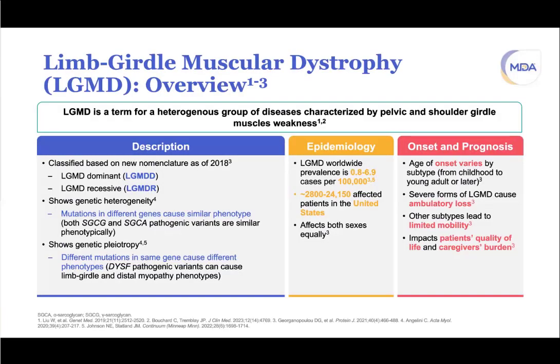Limb girdle muscular dystrophy, or LGMD, is a very heterogeneous group of diseases fundamentally characterized by weakness in the shoulder and pelvic girdle. Patients were previously classified into dominant (LGMD1s) and recessive (LGMD2s) forms. As of 2018, the new nomenclature calls them LGMD dominant (LGMDD) or LGMD recessive (LGMDR).